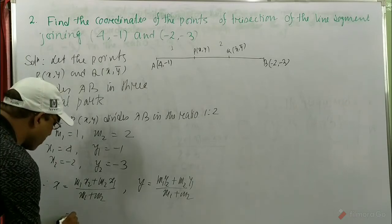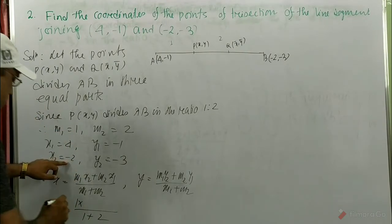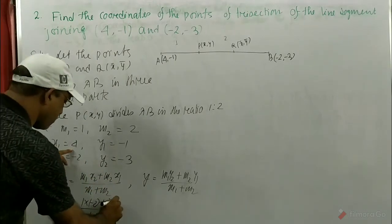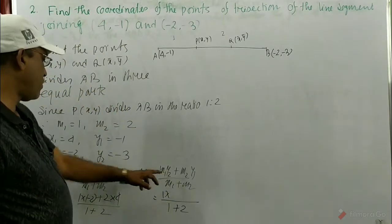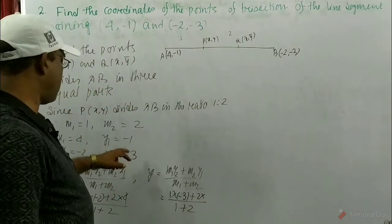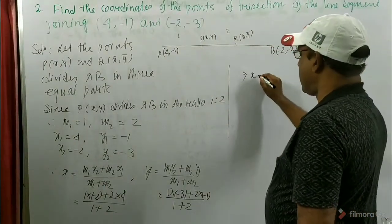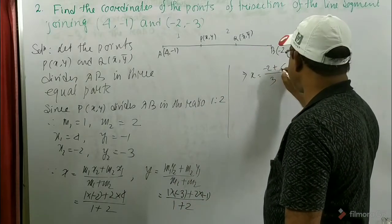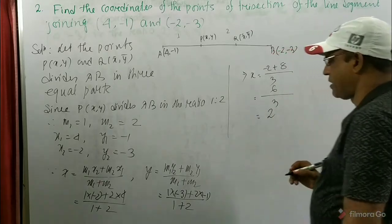Now putting in the values: m1 = 1, m2 = 2. So x = (1 × (-2) + 2 × 4) / (1 + 2) = (-2 + 8) / 3 = 6 / 3 = 2. So the value of x is 2. Next, y = (1 × (-3) + 2 × (-1)) / (1 + 2) = (-3 - 2) / 3 = -5 / 3.